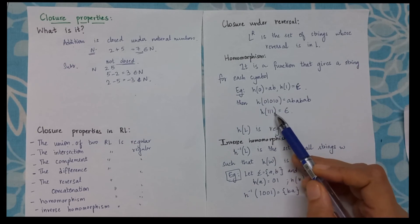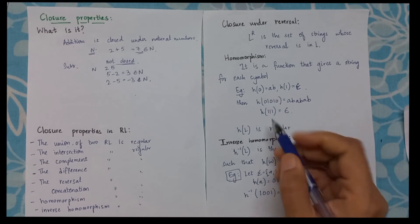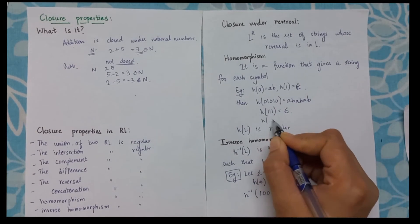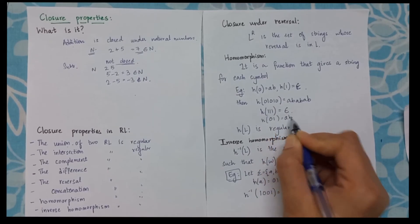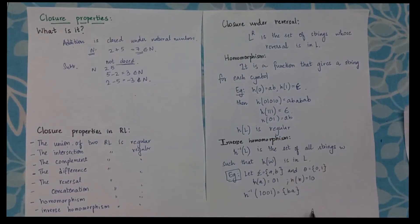What will be h(1,1,1)? What will be h(0,1,ε)? What will be h(0,1,A,B)? Now this operation is also giving me regular language.